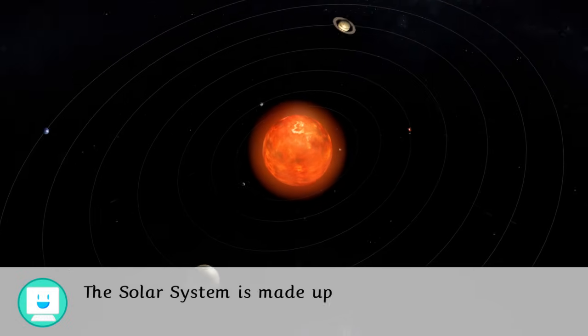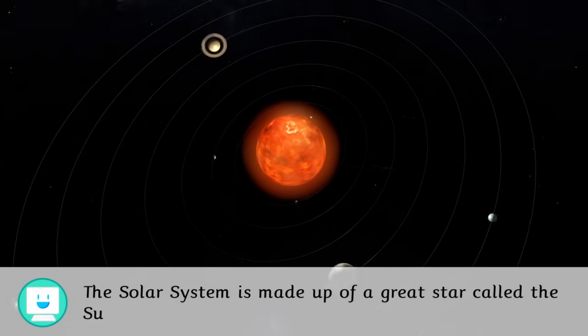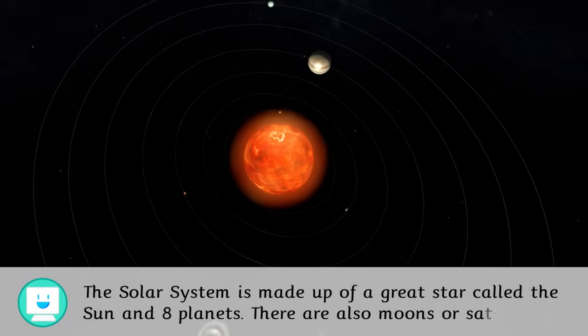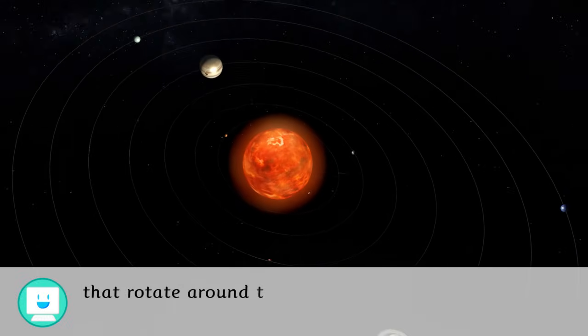The solar system is made up of a great star called the Sun and eight planets. There are also moons or satellites that rotate around the planets.